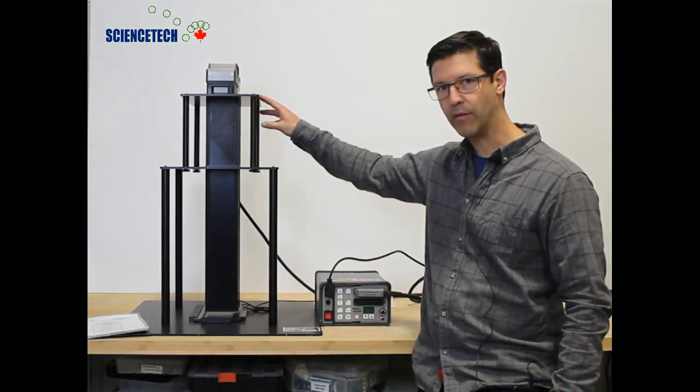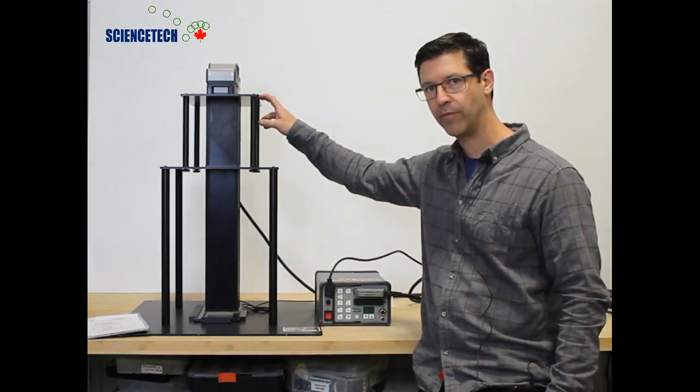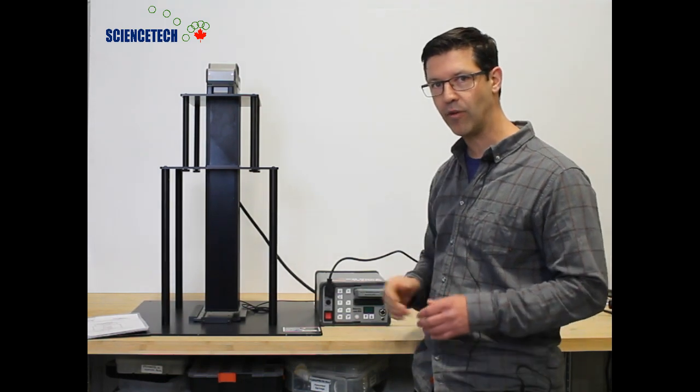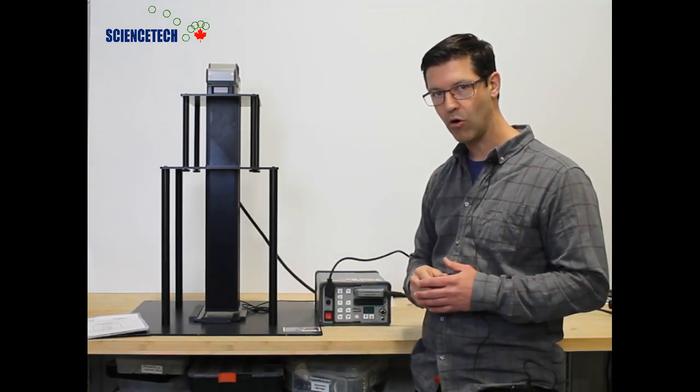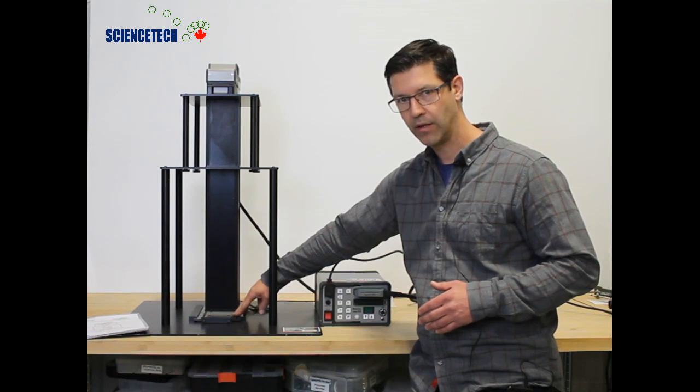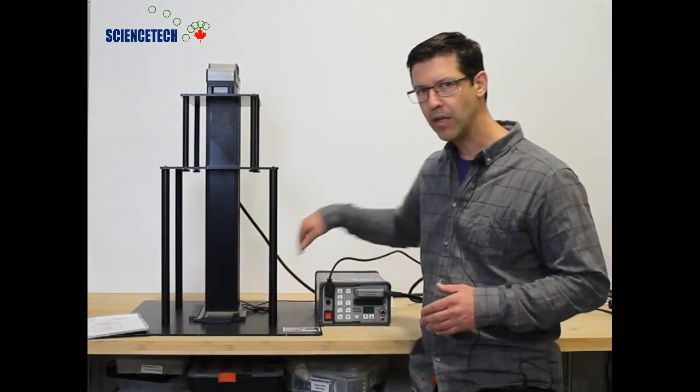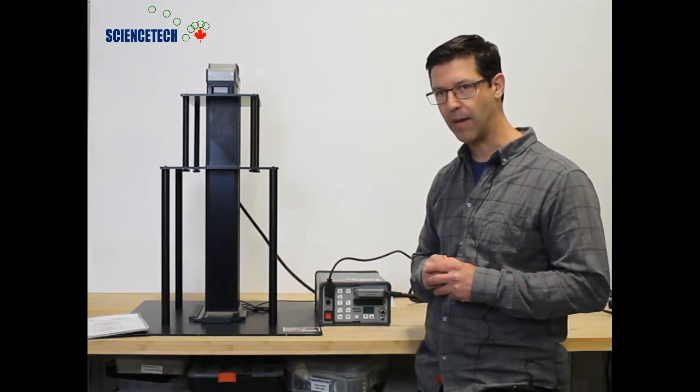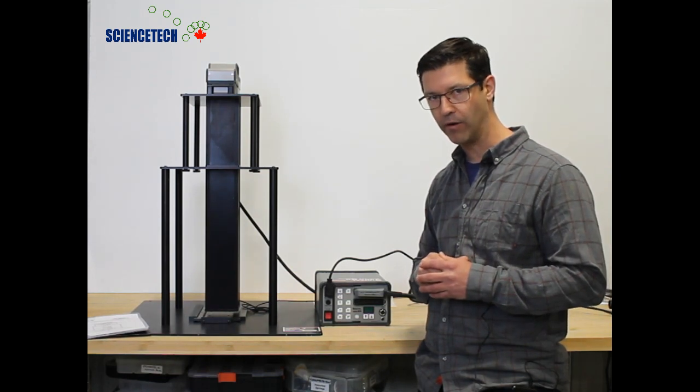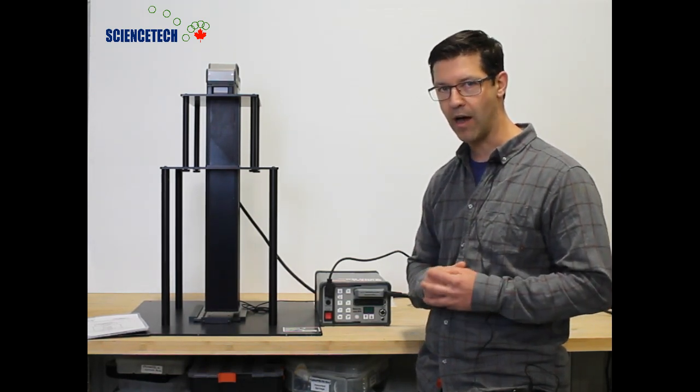The specialized homogenizing system takes the power from the flash lamp and distributes it evenly over the 50 by 50 millimeter target at the target plane. It also allows us to capture most of the power producing extremely high sun levels.